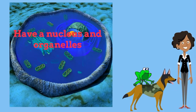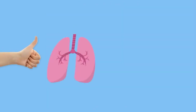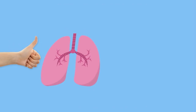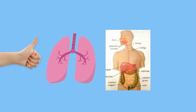All multicellular organisms start as a single cell, and as the cell multiplies, the cells start to specialize into different types of cells. For example, in humans, cells become tissues. Tissues form organs, organs are organized into organ systems, and organ systems create organisms.